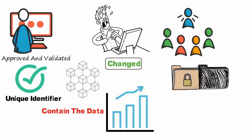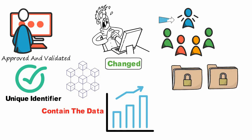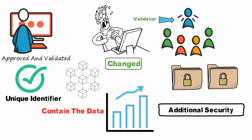Whenever an individual joins the network, they will receive a full copy of the ledger automatically, making them a part of the network. The individual also becomes a validator, which is in charge of verifying transactions. This form of validation provides additional security, as any changes to the chain will need to be accepted by the network participants.